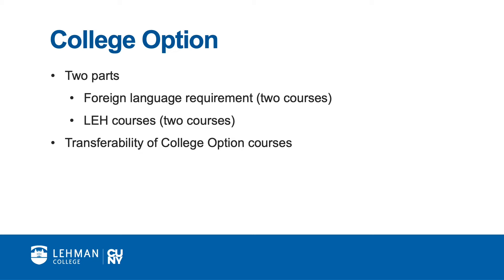This does not mean that the requirement is optional for students. Lehman's college option requirement is made up of two parts: a foreign language requirement, which is two courses, and an LEH requirement, also two courses. Some students may not have to complete the full four-course requirement, depending on the number of credits transferred and whether the student has completed an associate's degree.